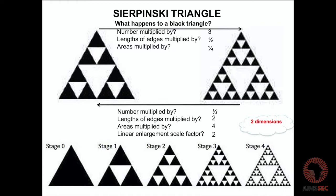The lengths of the edges are a half and the areas are a quarter. Below, the arrow goes from right to left, from stage 4 to 3 to 2 to 1 to 0. Each time we have a third as many triangles. The lengths of the edges are doubled — they're getting bigger — and areas are multiplied by 4. We say that is a linear enlargement scale factor of 2.